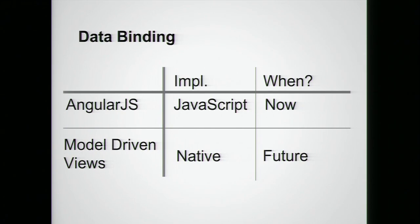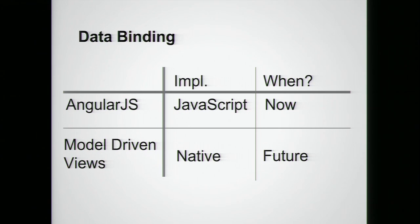So data binding is quite awesome and can remove a lot of boilerplate, and the best thing is that it's available in browsers now because AngularJS has support for data binding, implementing it in JavaScript without any kind of crazy wrappers or getter/setter methods for your model, and it works in any current browser that you might want to use.